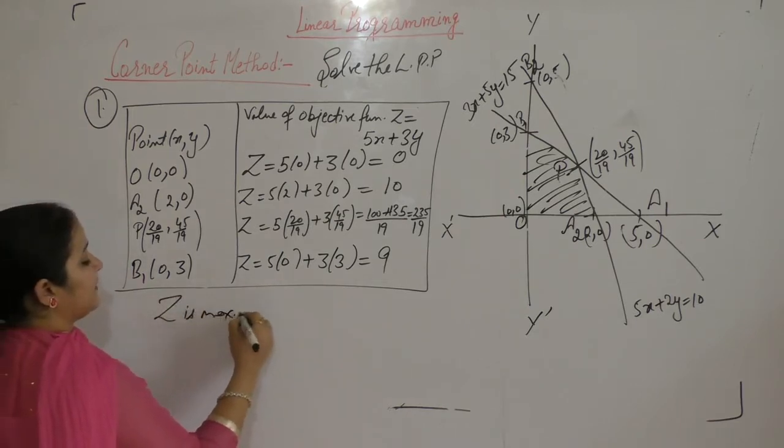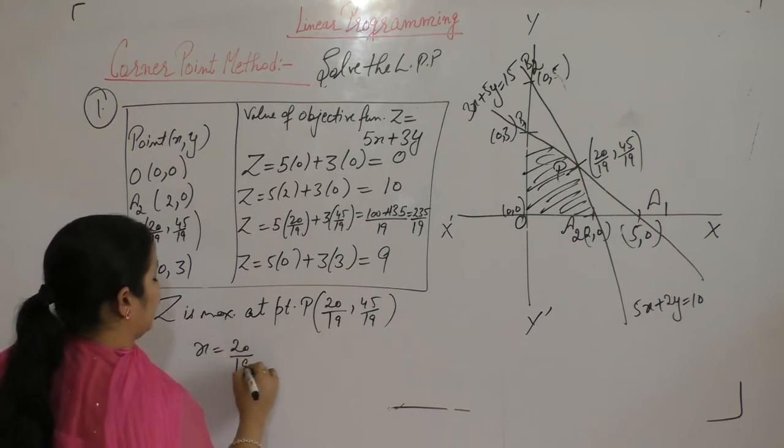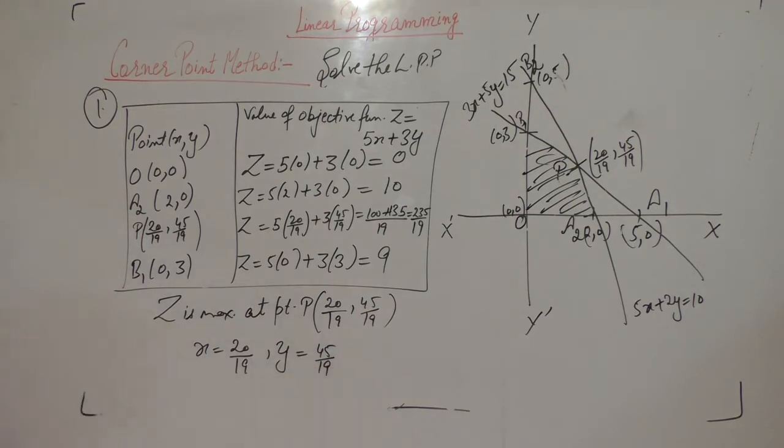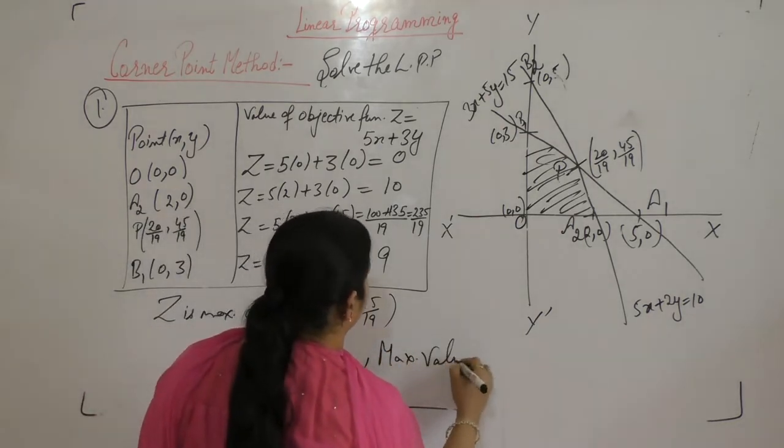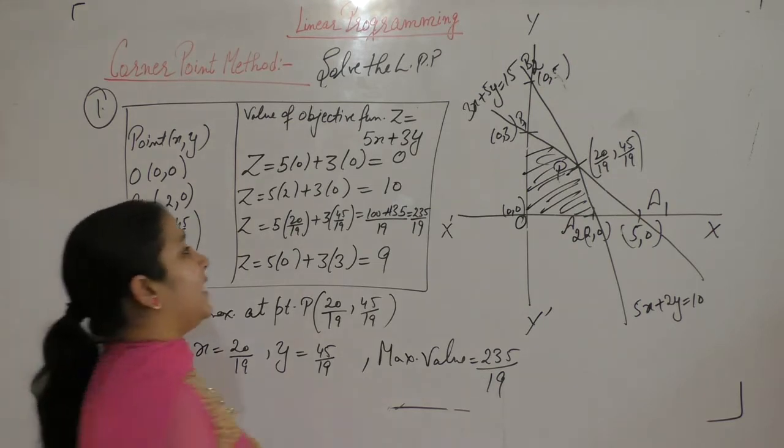Clearly, z is maximum at the point P. Z has maximum value at point P, 20 by 19, 45 by 19. So x equals 20 by 19, y equals 45 by 19 is the optimal solution of the given LPP, and the maximum value is 235 by 19.